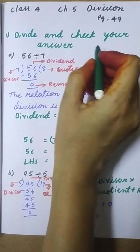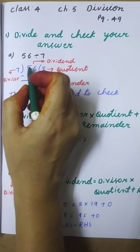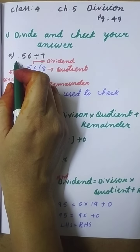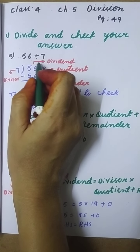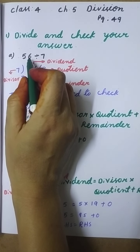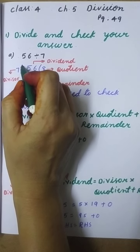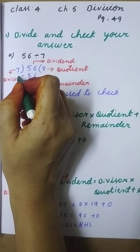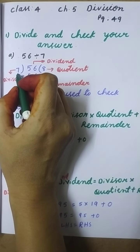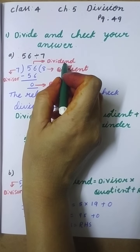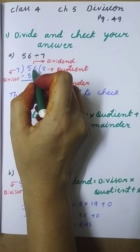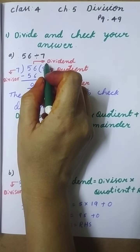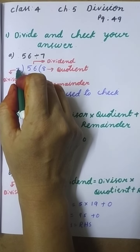Divide and check your answer. First question: 56 divided by 7. We write 56 in the middle - this is the dividend, the number we are dividing. The number we are dividing by, 7, is called the divisor.